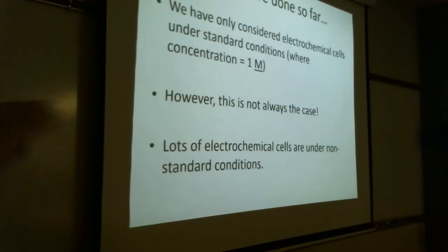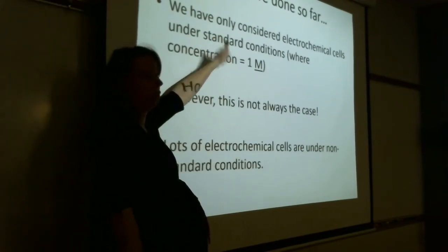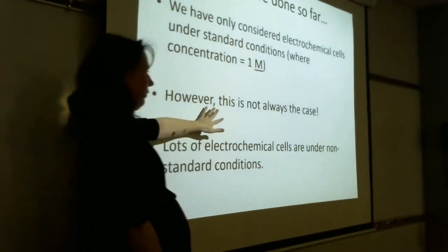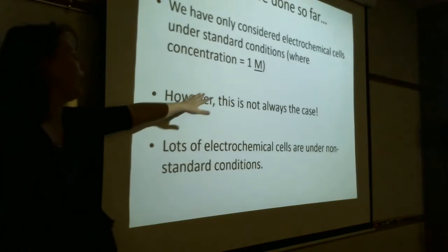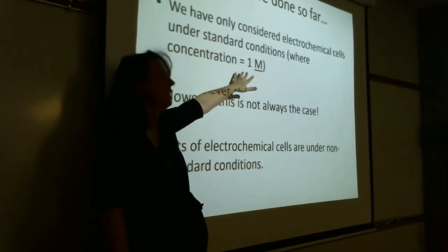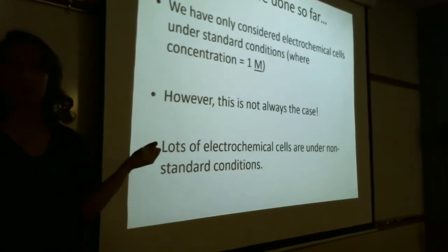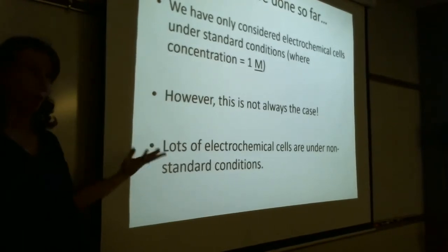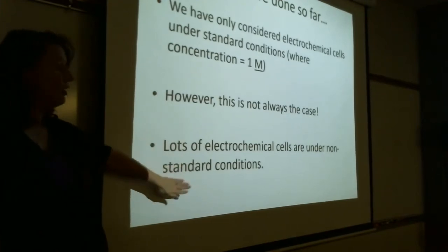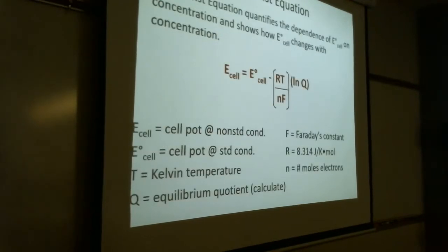So far we've only dealt with standard conditions — 25°C and one molar concentration. But the vast majority of batteries are not at one molar concentrations — they're significantly different. So these are not standard conditions when you're working with your phone battery, for instance. We need to calculate cell potential under non-standard conditions, and to do that we use the Nernst equation.